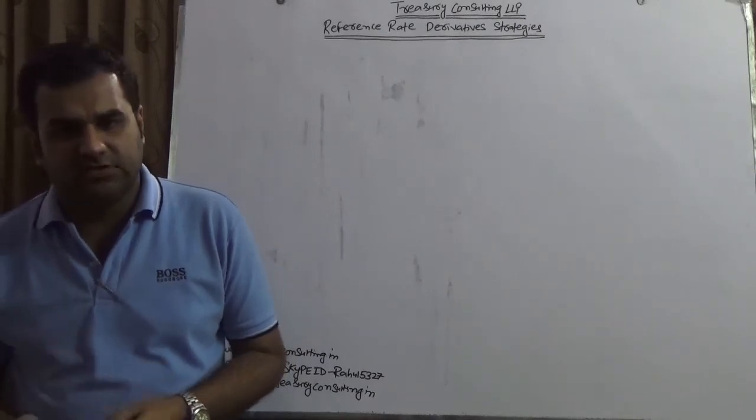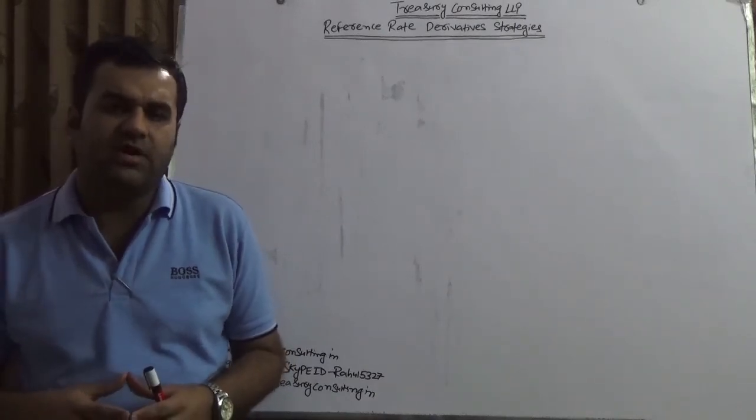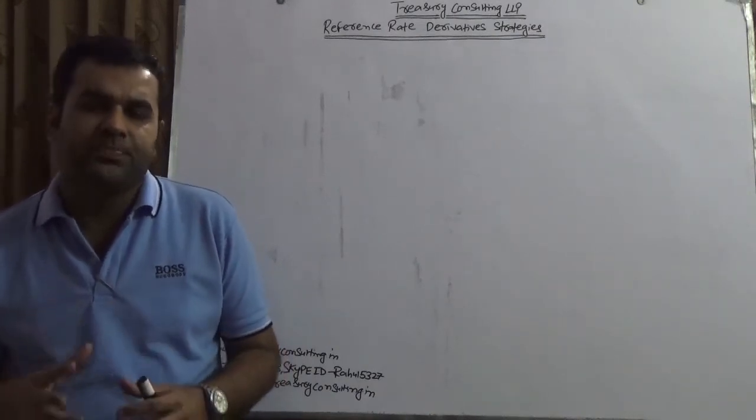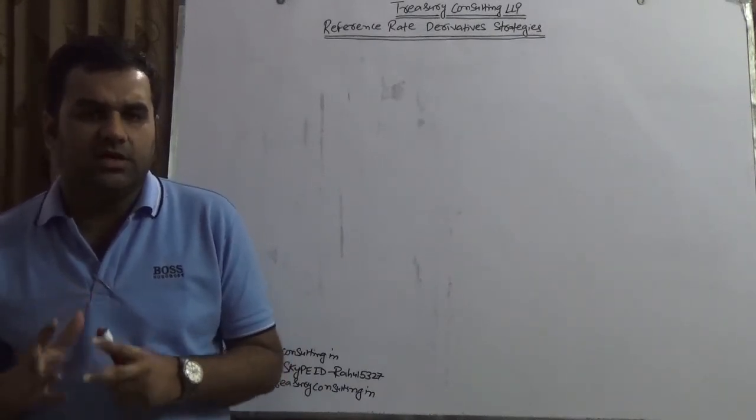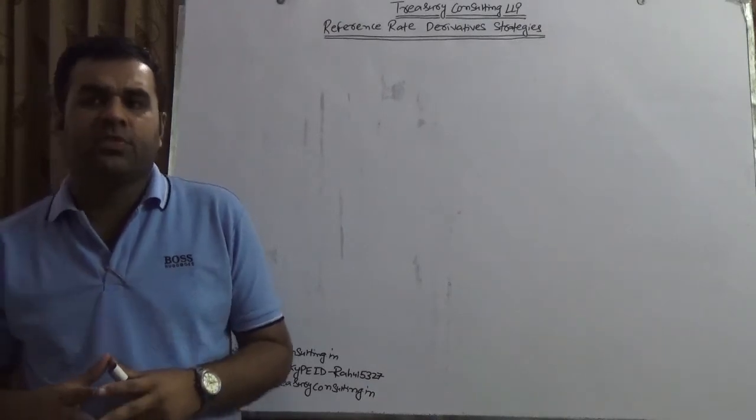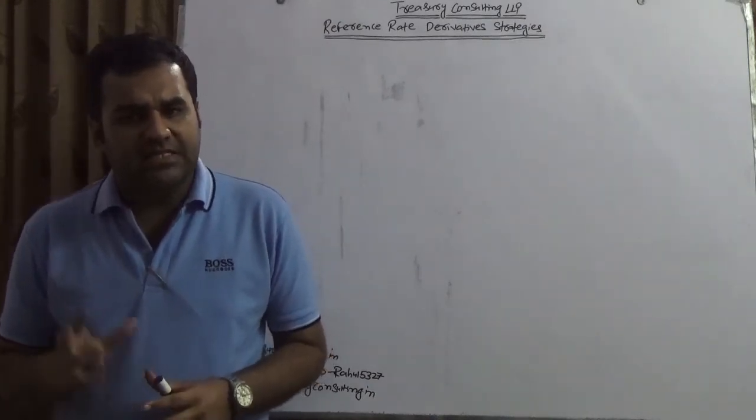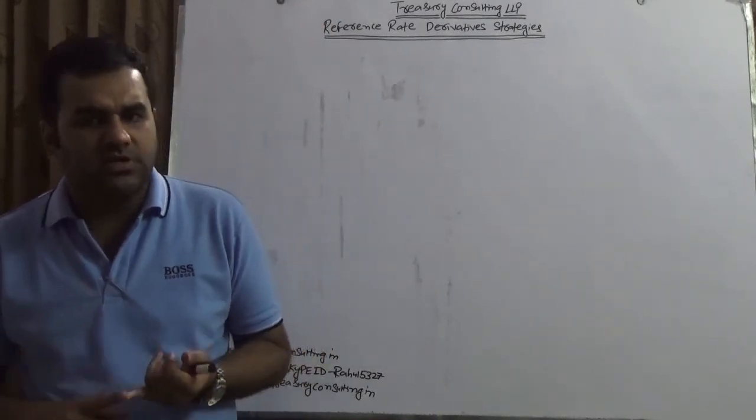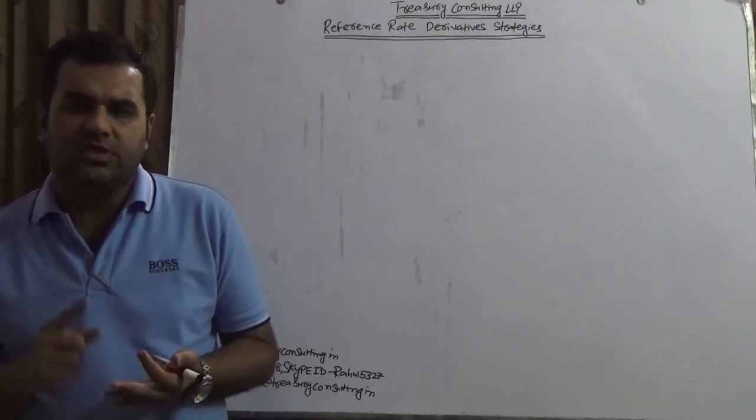This YouTube video would cover part of that. From an accounting point of view there are three kinds of exposures a company could have: cash flow exposure, fair value exposure, and net investment exposure.